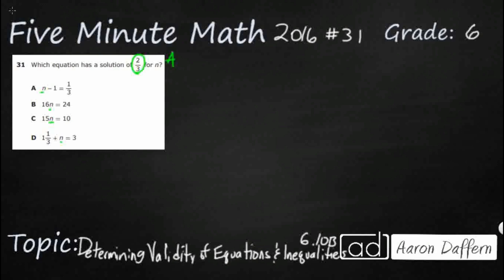So let's look at option A. I'm going to put 2 thirds in place of that n, giving us 2 thirds minus 1. Does that equal 1 third? We need to simplify the left side. 1 is the same as 3 thirds, so we have 2 thirds minus 3 thirds, which gives us negative 1 third. The fraction is correct, but it's negative rather than positive — so that is incorrect. It's not going to be A.